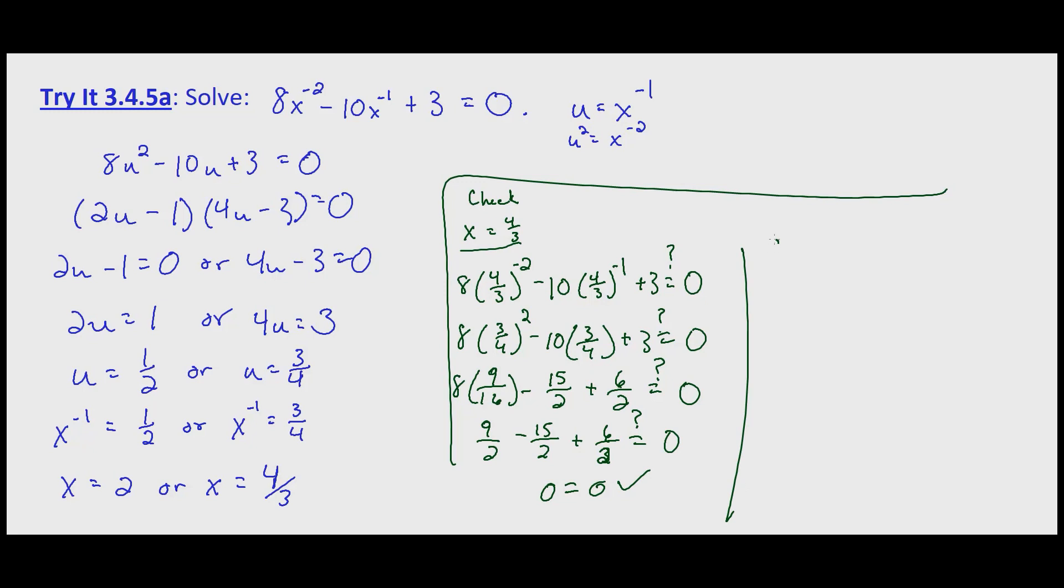So what about x equals 2? This one will be a little bit simpler. 8 times 2 to the negative 2 minus 10 times 2 to the negative 1 plus 3, does that equal 0? So 8 times 2 to the negative 2, that's 1 over 2 squared, so that's going to be 8 times 1 fourth, minus 10 times 1 half, 2 to the negative 1, plus 3. Does that equal 0?